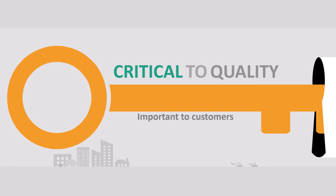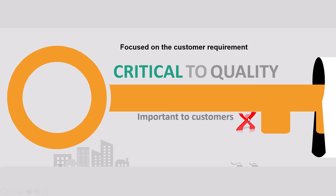The fifth point is CTQ, which is critical to quality. A critical philosophy of Six Sigma is that it is based on customers' needs. Whatever improvement we are planning to do, it has to be focused on customer requirements. Critical to quality are all those parameters which are important to customers. You don't want to do any improvement which is not important to your customer, because that will be a waste of time and money on something the customer is not concerned about. You have limited resources, so do improvements in those areas which are of concern to your customer.